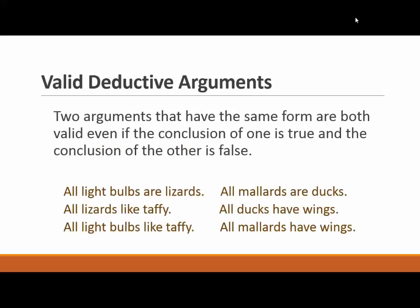In this example, both arguments are valid, even though the statements in one are absurd and the statements in the other are all true. In fact, they have exactly the same form, so if one is valid, so is the other one. Likewise, if an argument is invalid, all other arguments with the same form would also be invalid.